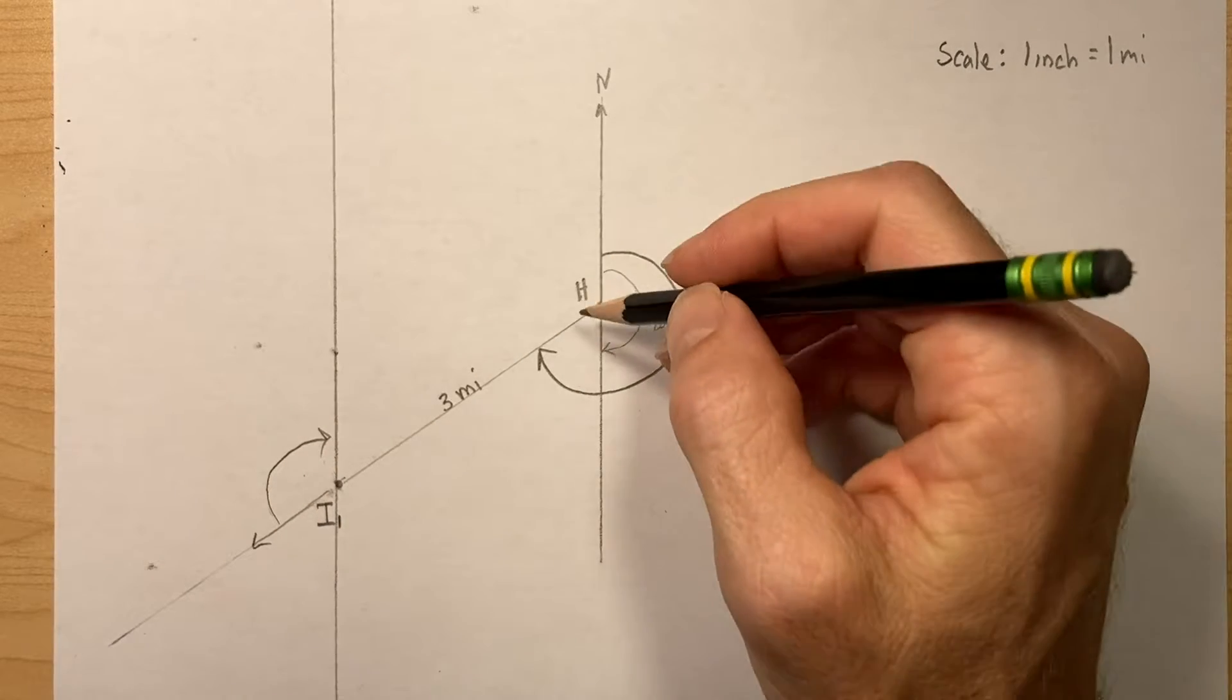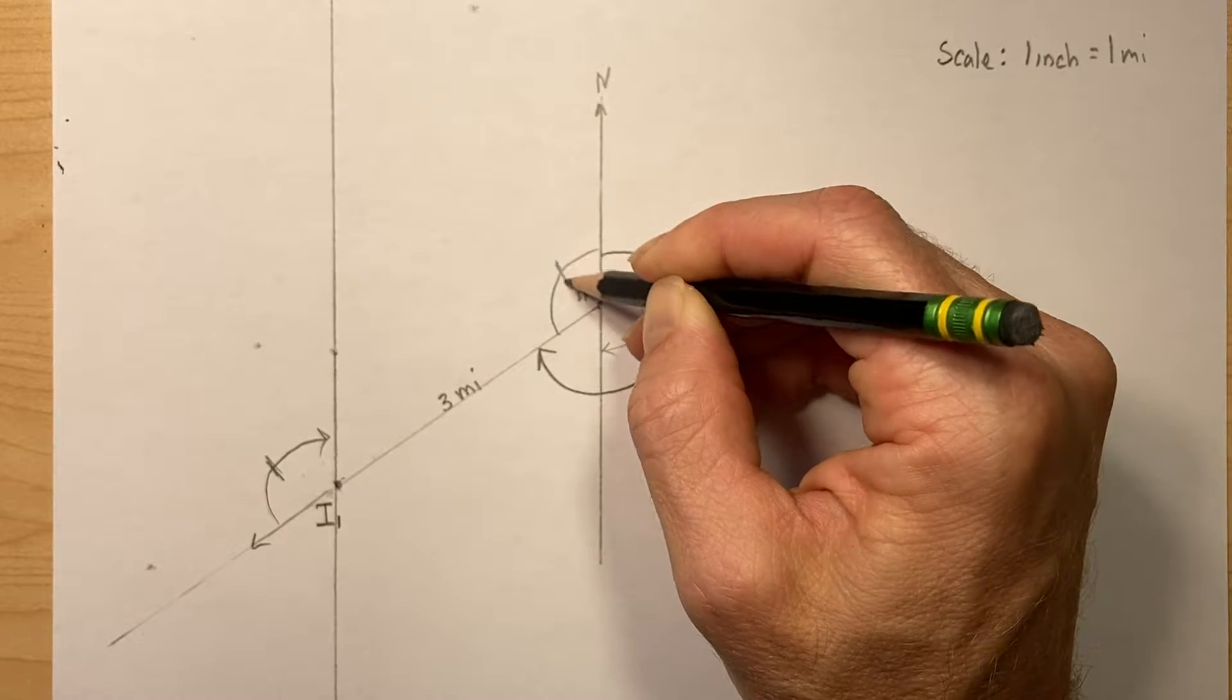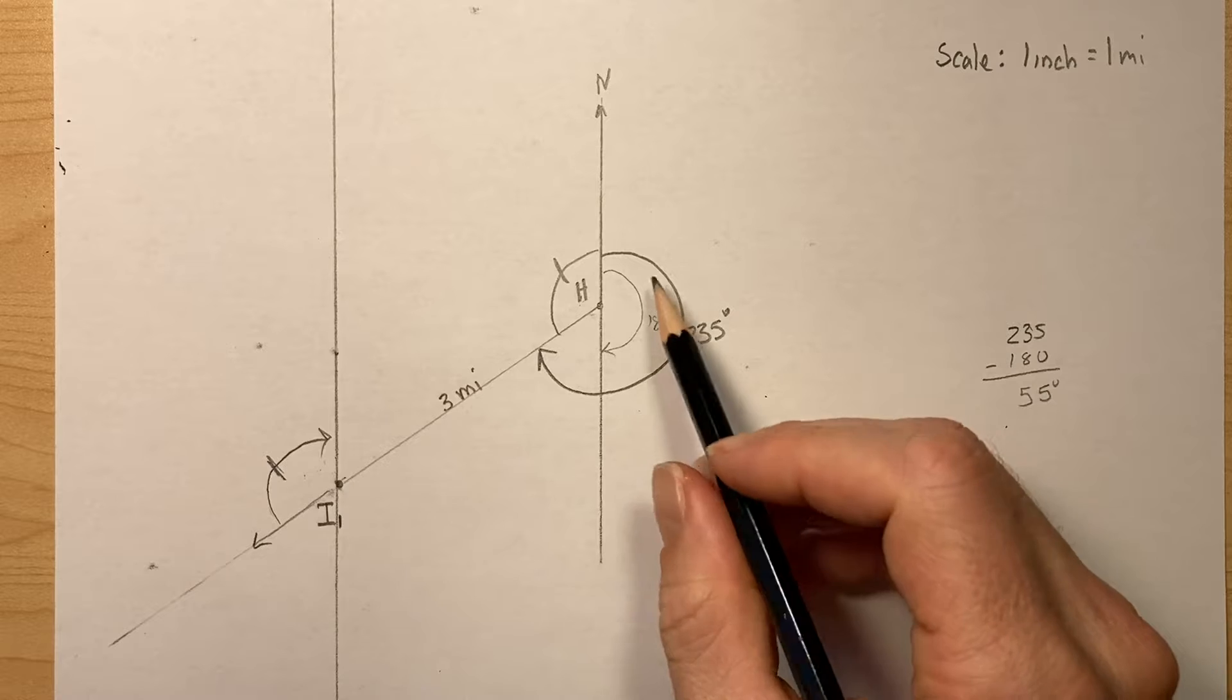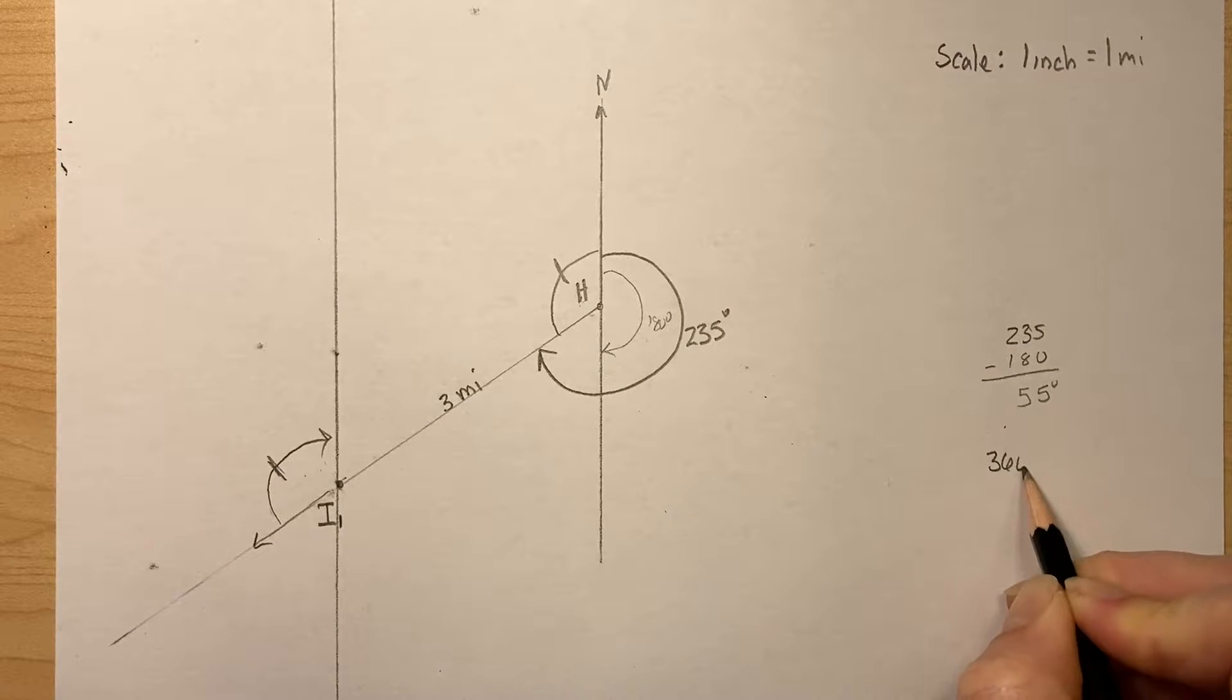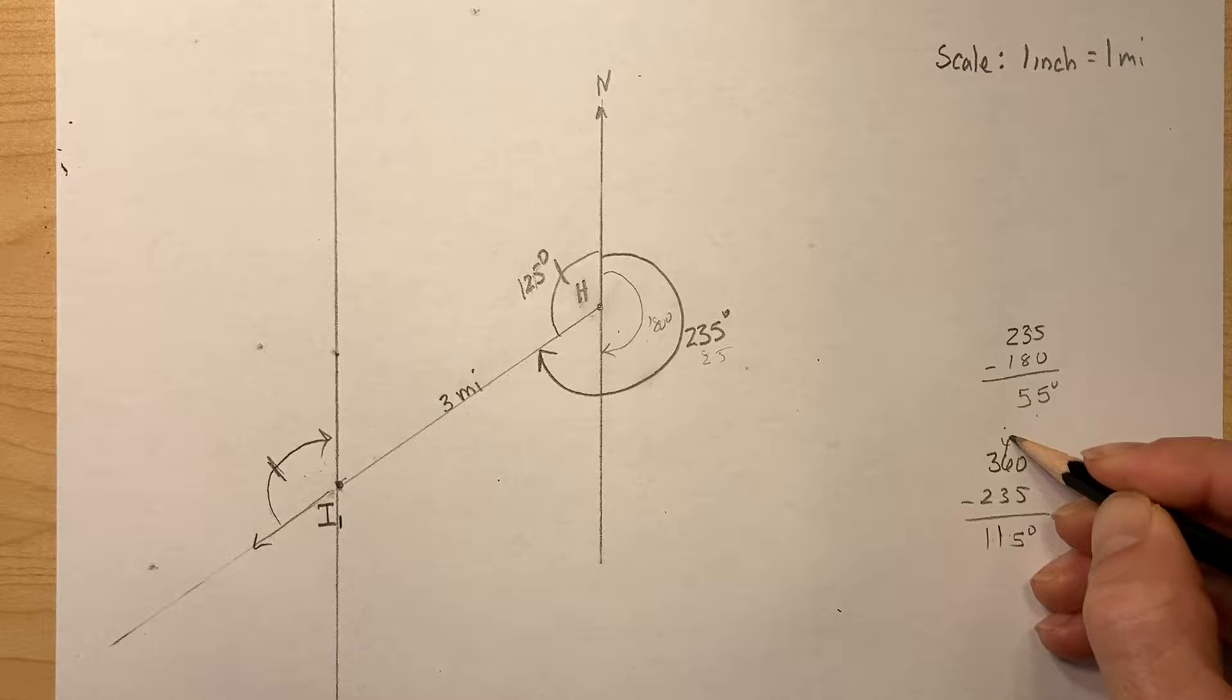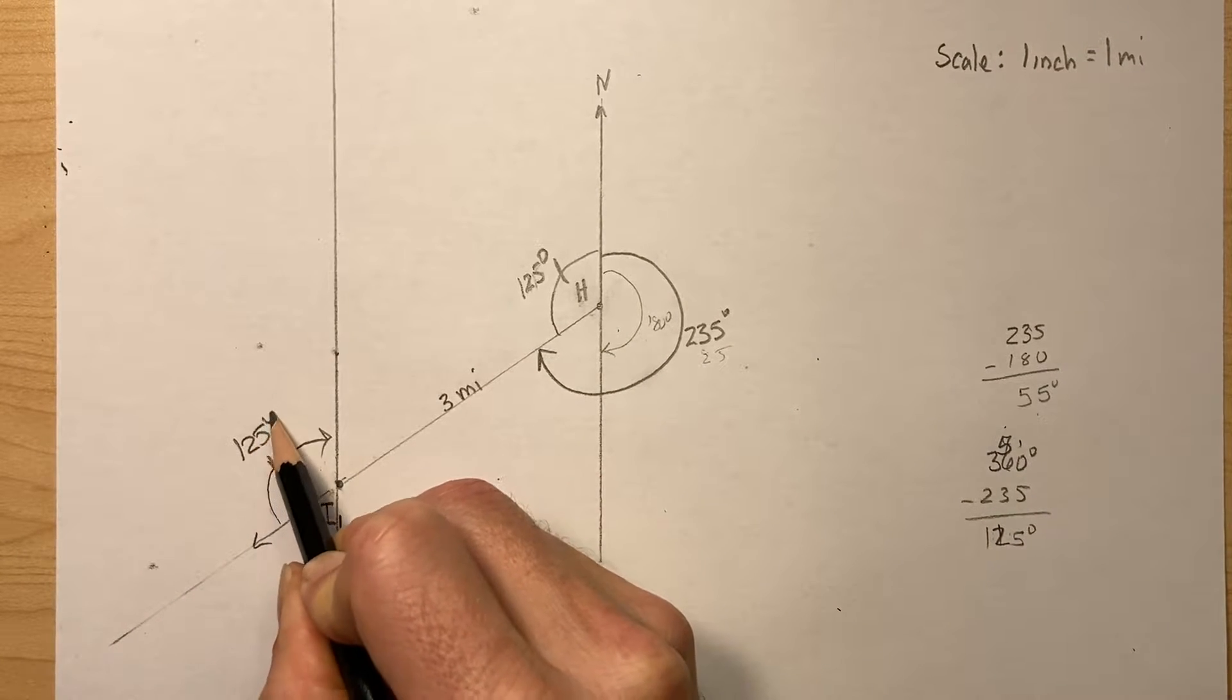Well, this angle right here is going to be the same as this angle right here. I know we could measure this, right? But we know what this angle is. And this angle is going to be 360 degrees, that's a full circle, minus 235. So that's going to be... 360... So this is 125 degrees also.